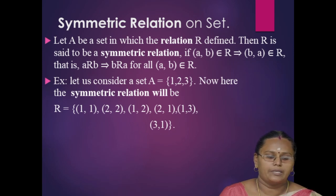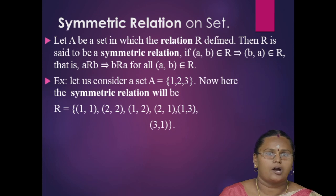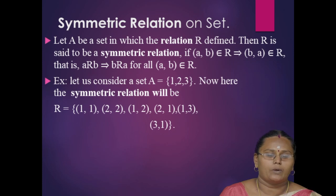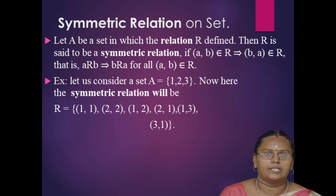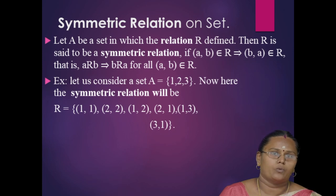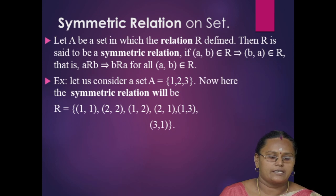Example: let A = {1, 2, 3}. The symmetric relation will be R = {(1,1), (2,2), (1,2), (2,1), (1,3), (3,1)}. Here, the pairs (1,2) and (2,1), and (1,3) and (3,1) are both in R. So the relation is symmetric.